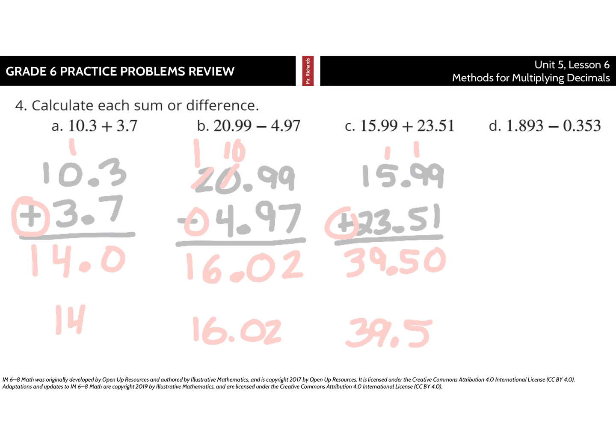And for our last question here, we have 1.893 minus 0.353. It's subtraction. And so, 3 thousandths minus 3 thousandths is no thousandths. 9 hundredths minus 5 hundredths is 4 hundredths. 8 tenths minus 3 tenths is 5. And 1 minus 0 is 1. So, we have 1.540, or simply 1.54.